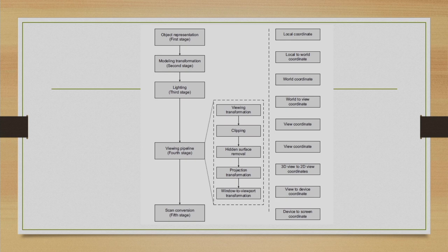Hello and welcome to lecture number 14 in the course Computer Graphics. As usual, we will start by recollecting the pipeline stages which we are currently discussing. There are 5 stages in the 3D graphics pipeline. This pipeline refers to the process of rendering a 2D image on a computer screen generated from a 3D scene. Among those 5 stages, we have seen the first stage: object representation. We have also discussed modeling transformation, the second stage.